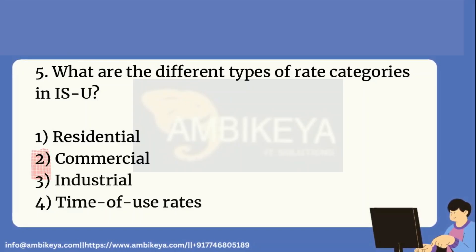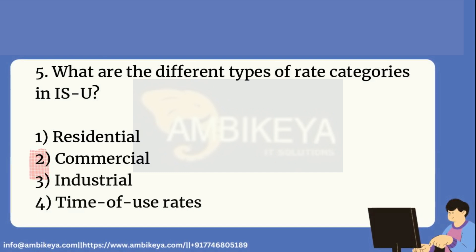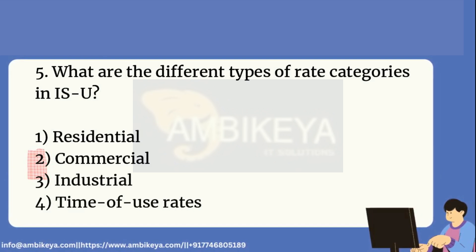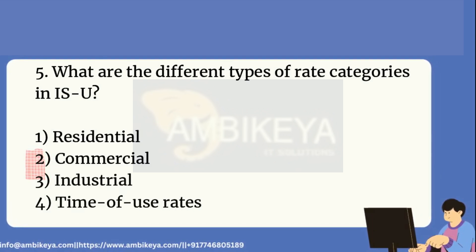Question 5: What are the different types of rate categories in IS-U? The rate categories are: 1. Residential, 2. Commercial, 3. Industrial, and 4. Time of Use Rates.